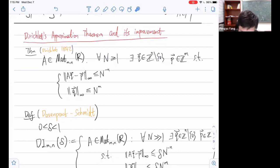We'll start from Dirichlet's approximation theorem. This is a classical theorem in Diophantine approximation by Dirichlet. It says that given any n by n real matrix A, and for any capital N at least one, there exists a non-zero integral vector Q in Z^n and integral vector P such that the following system of inequalities are satisfied: A times Q is close to the integral vector P, of order capital N to negative n, and the size of Q is at most capital N to the power m.